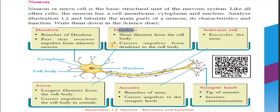The next part is the dendron. The dendron is the shortest filament from the cell body. The branches of the dendron are called dendrites. It carries impulses from the dendrites to the cell body.